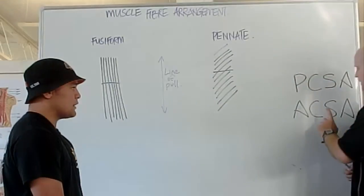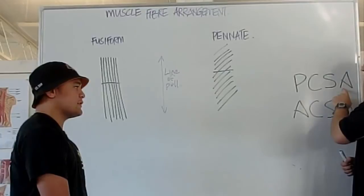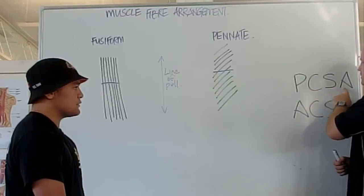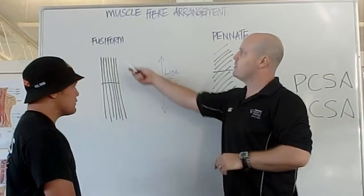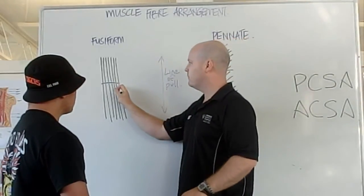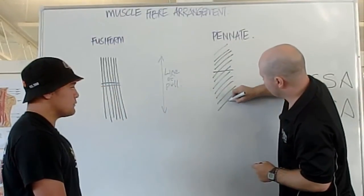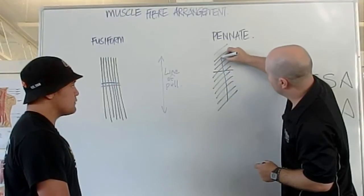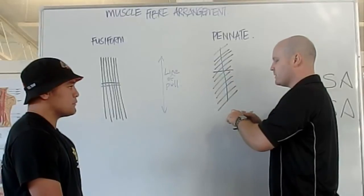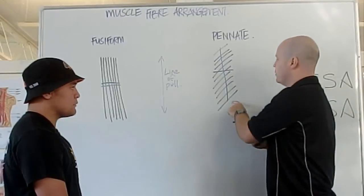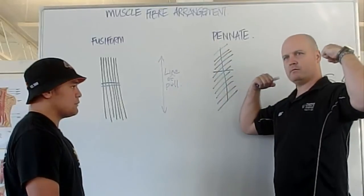Another way we can look at them is their physiological cross-sectional area. This is when we chop across the muscle fibres. With fusiform, it's going to be the same. But with pinnate, if we go across the muscle fibres, it's going to be quite a bit different. It's going to be a lot bigger. So this is an indication of strength, because more muscle fibres mean more strength.